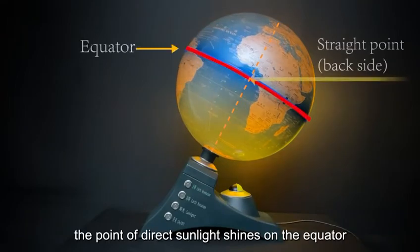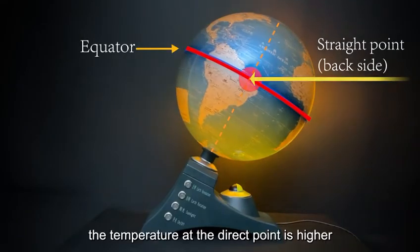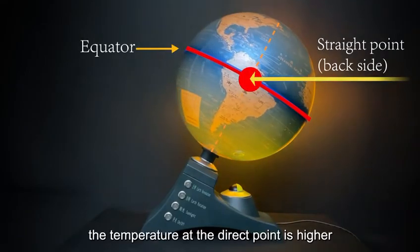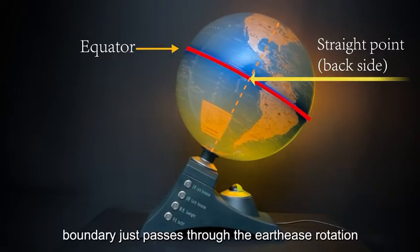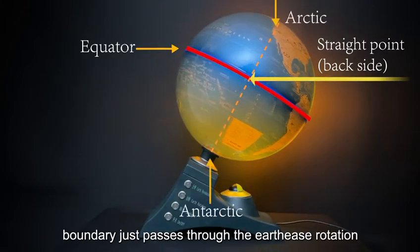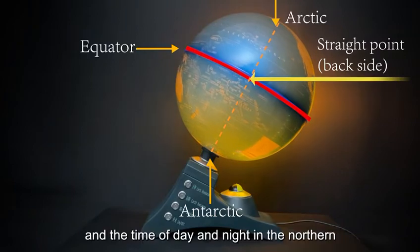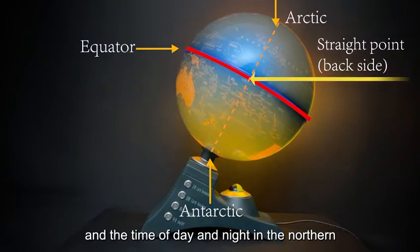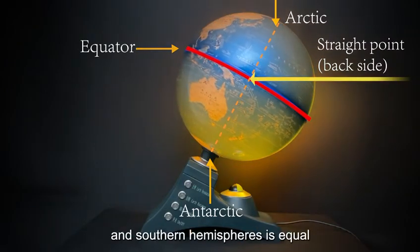Autumn Equinox: The point of direct sunlight shines on the equator, and the temperature at the direct point is higher. The day-night boundary just passes through the Earth's rotation axis and the north and south poles, and the time of day and night in the northern and southern hemispheres is equal.